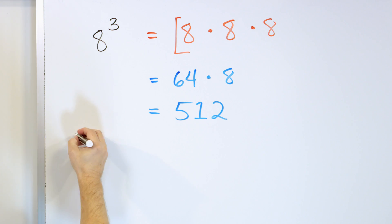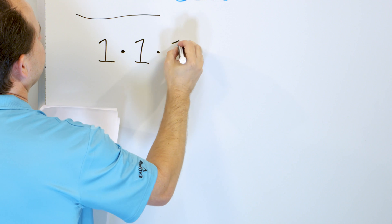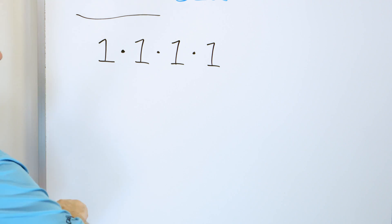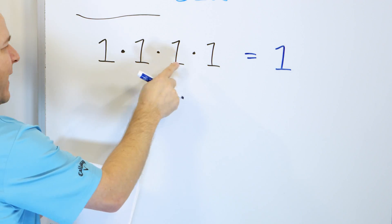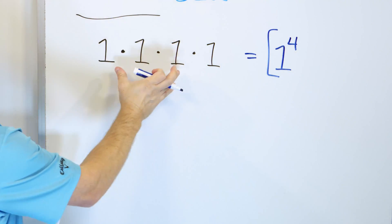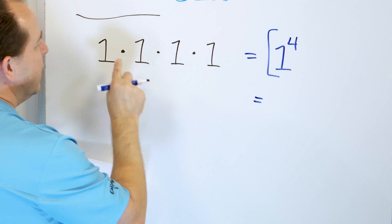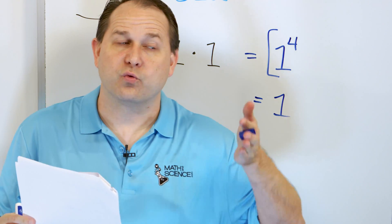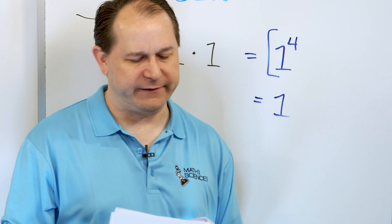What about one times one times one times one? I want you to write that as an expression with an exponent. Well, it's all ones, so the base is going to be one. We have four of them multiplied by itself, so it's one to the power of four. And of course, one times one times one times one is just equal to one. When you have one raised to any exponent, you always get an answer of one.